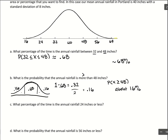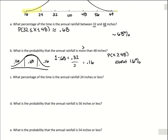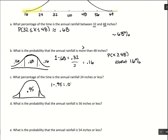Next: what percentage of the time is annual rainfall 24 inches or less? We're going out to two standard deviations below, so we use the fact that 95% falls in the middle when we're two standard deviations away. Taking out the 0.95 leaves 0.05 in both tails combined. Cutting that in half gives 2.5% in each tail. So the probability of being at less than or equal to 24 inches is about 2.5%.